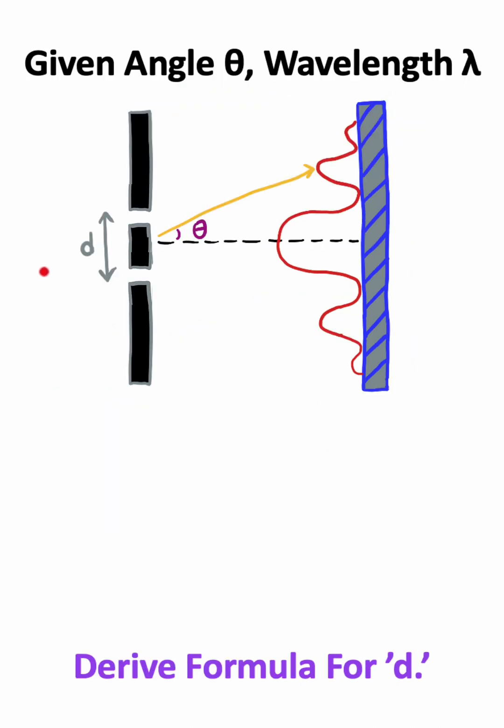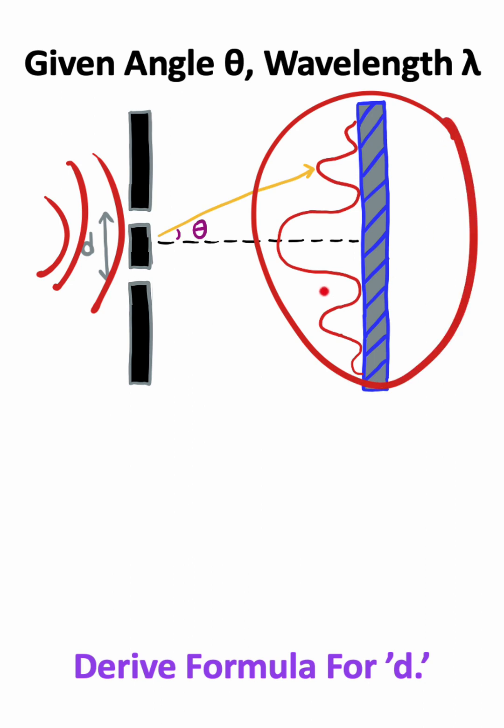In this problem, we have light which is fired through two small slits. This causes an interference pattern on a screen. We want to see if we can derive a formula for the distance between the two slits.